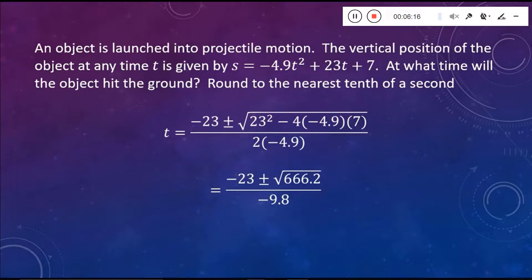So again, with that plus or minus there, we actually have two calculations that we are doing. We're doing negative 23 plus the square root of 666.2 all over negative 9.8. That's one calculation. And then the other calculation is negative 23 minus the square root of 666.2 all over negative 9.8. So we are going to come up with two separate t values here. And when you do those calculations, rounded to the nearest tenth of a second, we get negative 0.3 seconds and five seconds.